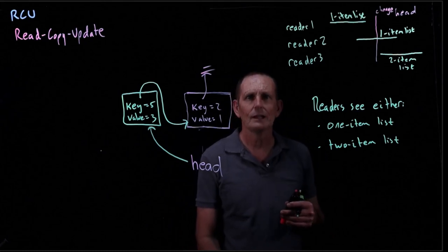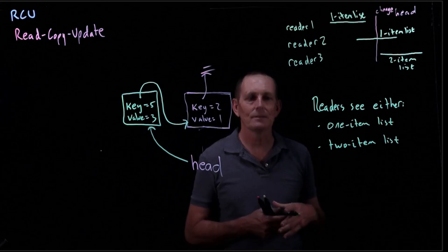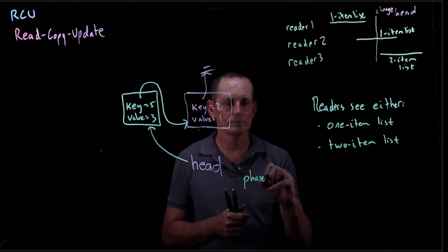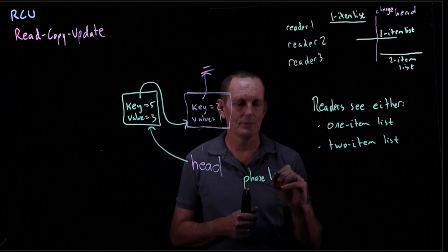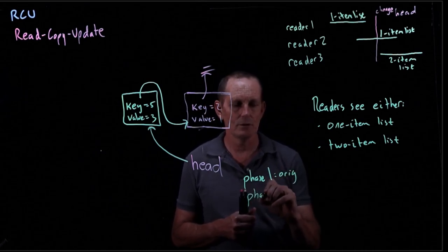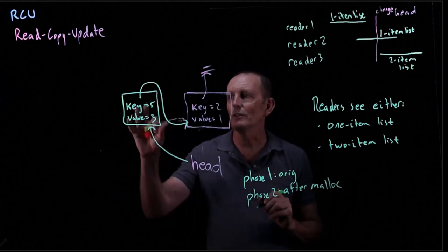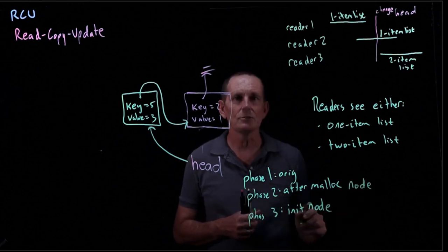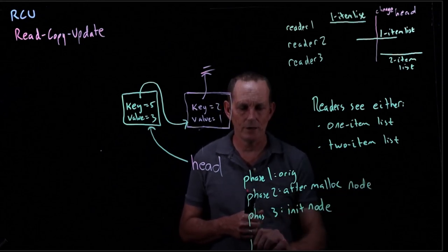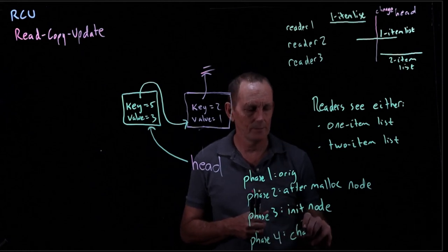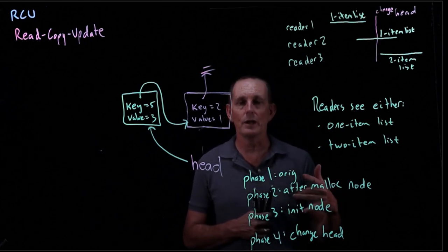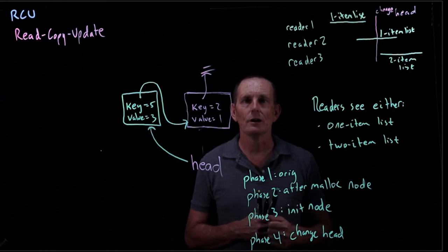Let's look at the phases. Phase one is the original. Phase two is after the malloc — we've allocated the node but it's empty. Phase three is when we initialize the node. Phase four is when we change the head. In phases one, two, and three, all readers are seeing one node. Any readers that start after phase four are seeing two nodes.